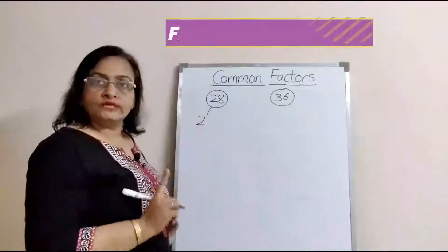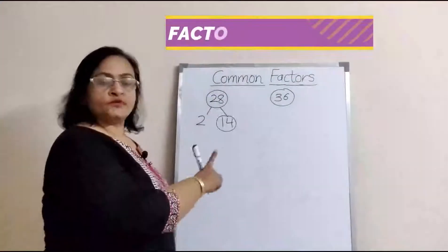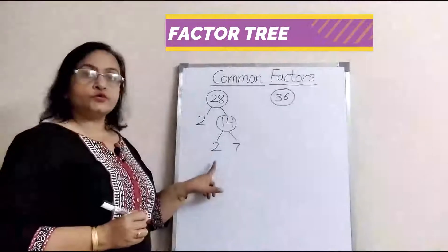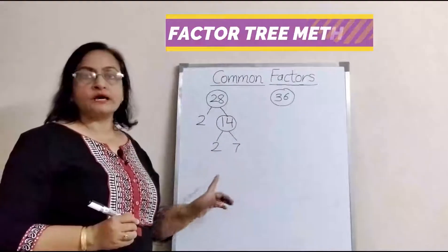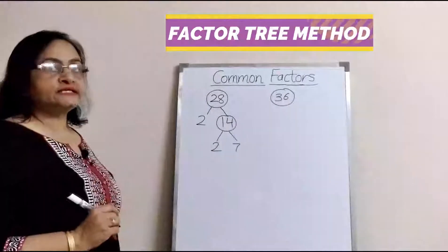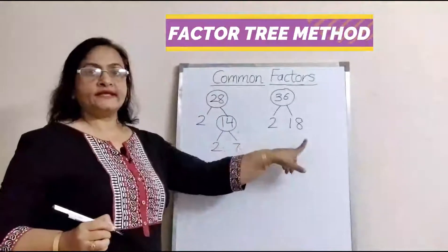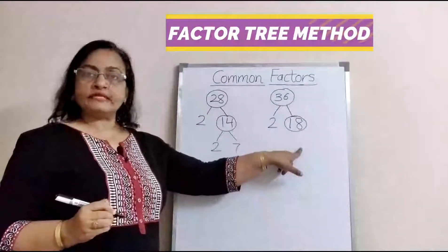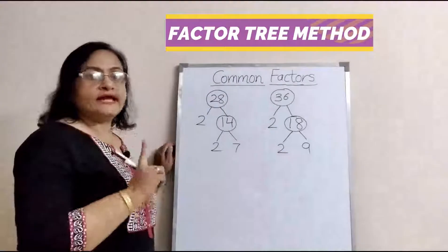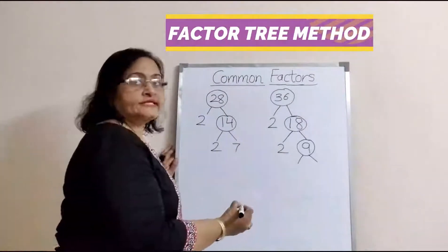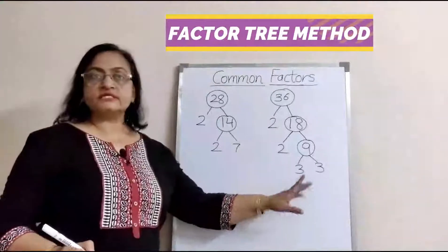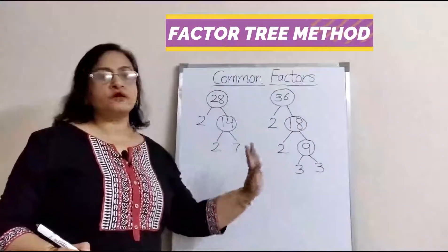First, we will use the factor tree method. For 28, the first pair is 2 multiplied by 14. 14 can be divided further: 2 sevens are 14. Both 2 and 7 are prime numbers, so we stop. For 36, the factors are 2 and 18. 18 can be divided further into 2 and 9. 9 can be divided further: 3 multiplied by 3. Since 3 is a prime number, we stop.